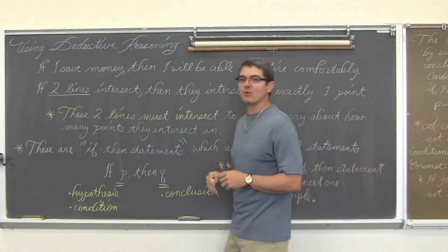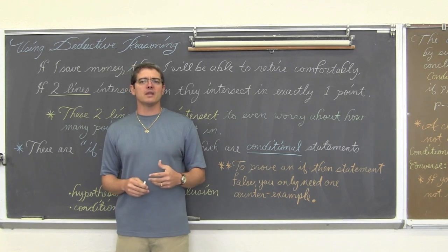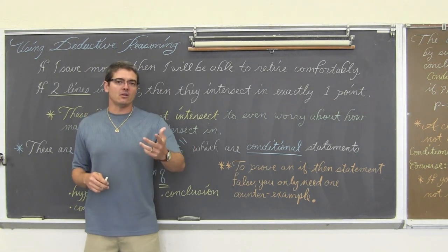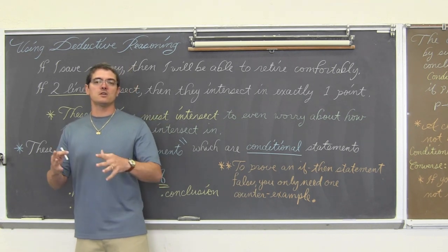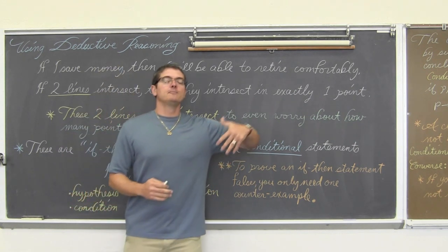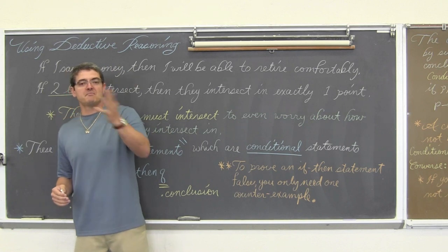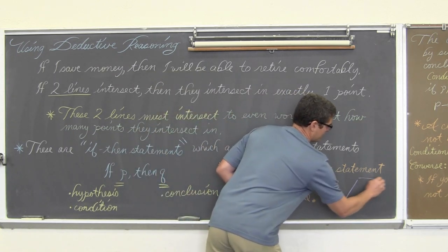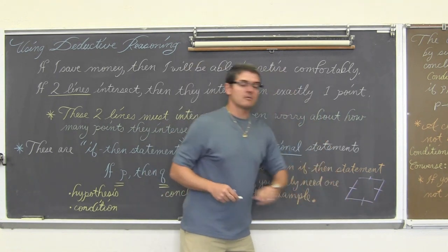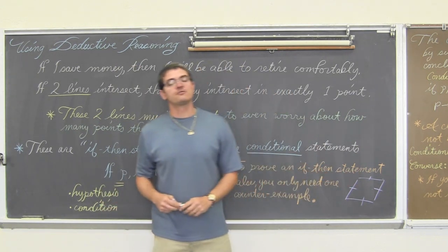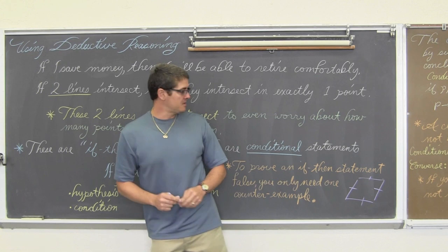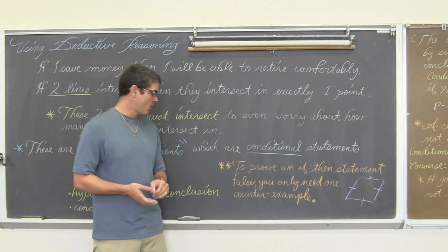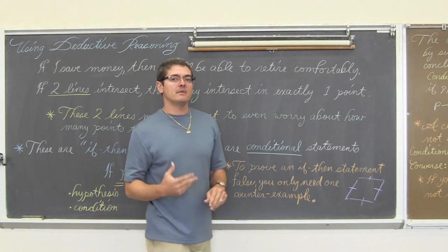What do I mean by that? If I said a quadrilateral — that is a polygon with four sides — a quadrilateral that has four equal sides, then it is a square. If a four-sided figure has four equal sides, then it is a square. That may seem like a true statement, except a rhombus is a four-sided figure with four equal sides. These hatch marks indicate that those four sides are equal. A rhombus has four equal sides, but it is not a square because the corners, the angles, are not right angles. So that would be a false statement.